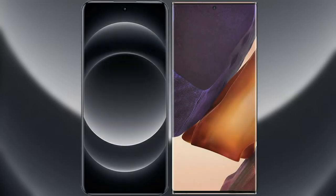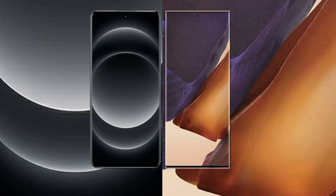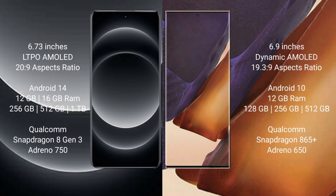I will compare the new Xiaomi 14 Ultra with Samsung Galaxy Note 20 Ultra. Xiaomi 14 Ultra comes with a 6.73-inch LTPO AMOLED display with an aspect ratio of 20:9. Samsung Galaxy Note 20 Ultra comes with a 6.9-inch Dynamic AMOLED display with an aspect ratio of 19.3:9.